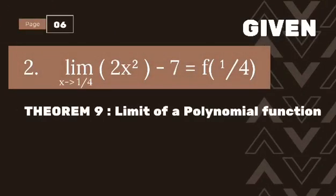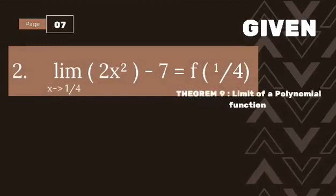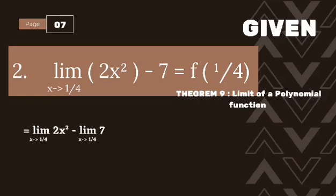In number two, the theorem used is Theorem 9, the limit of a polynomial function. Our equation is the limit of 2x squared minus 7 as x approaches 1/4. Our f(x) will become f(1/4). We are going to separate the limit of 2x squared minus 7.